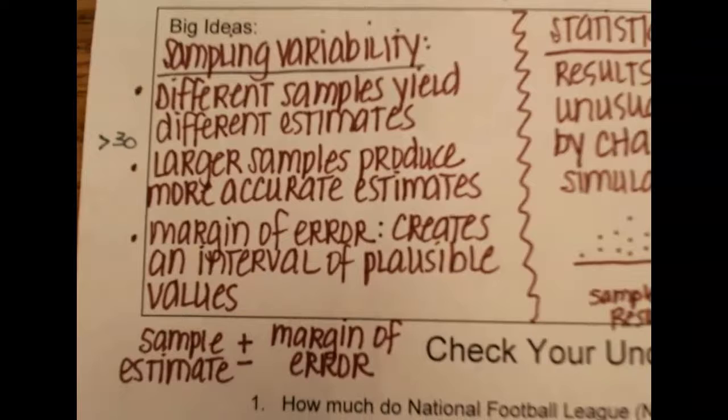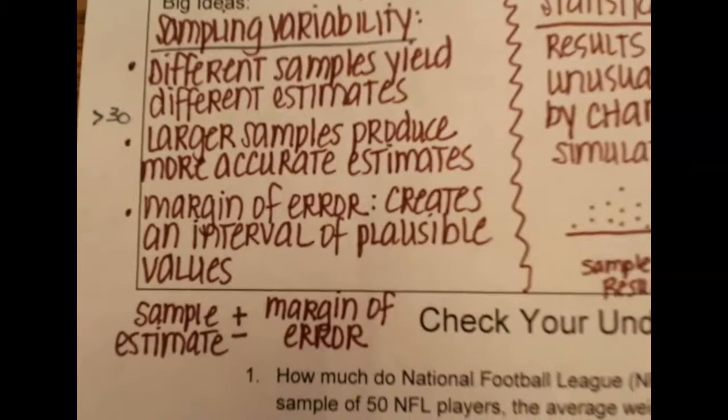And there's something called a margin of error. So your margin of error creates an interval of plausible values. We think if we did this again we'd get an answer between here and here, and it gives you kind of a high and a low probable values that you should be between. You see that on a lot of presidential polls.